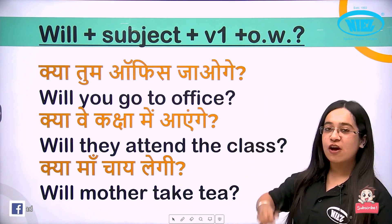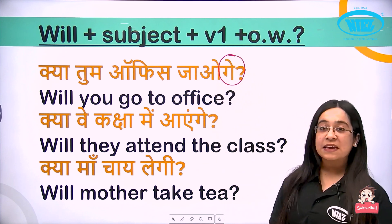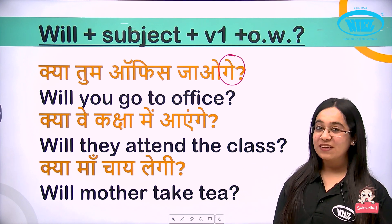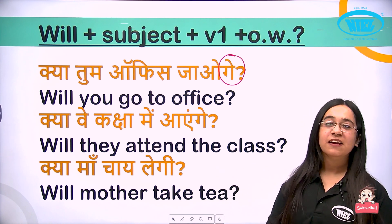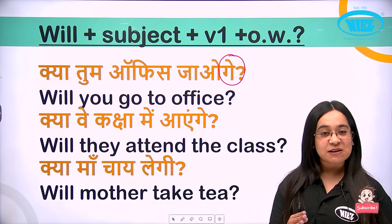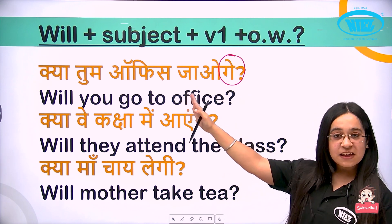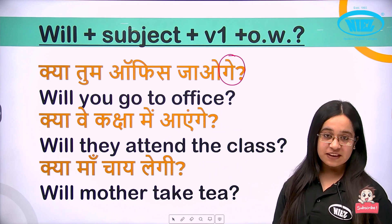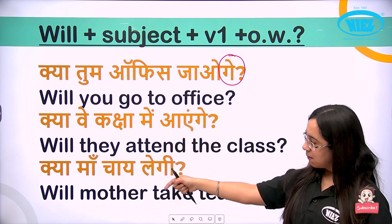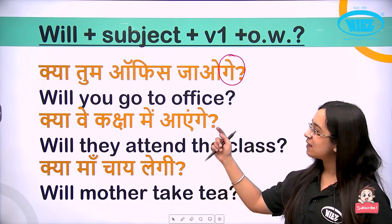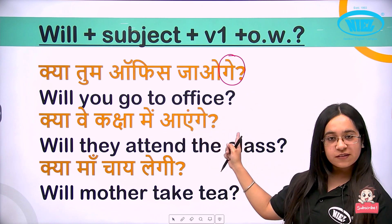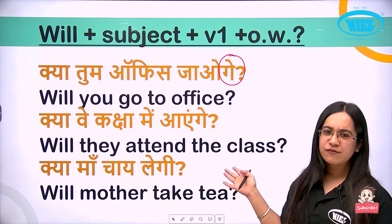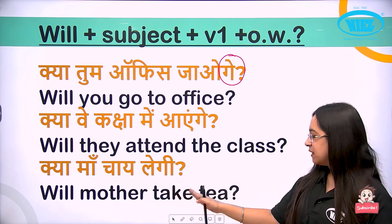Let's see examples. 'Kya tum office jaoge' — the Hindi ending is -ge and subject is tum, so: Will you go to office? 'Kya woh kaksha mein aayenge' — Will they attend the class, or will they come to class — both are fine. 'Kya maa chai legi' — Will mother take tea? All questions start with will, then subject, then first form and other words.